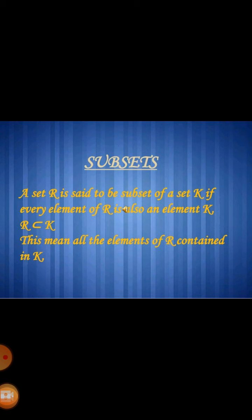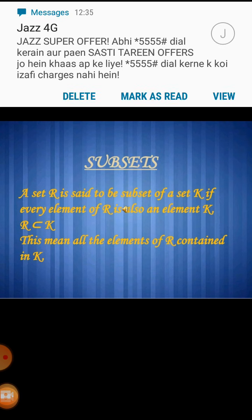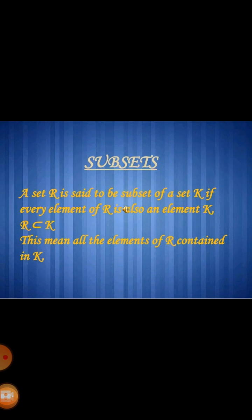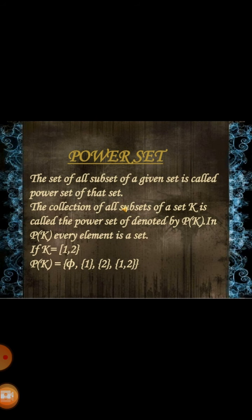Next we have subset. A set R is said to be a subset of a set K if every element of R is also an element of K. We express this with a subset symbol, meaning all the elements of R are contained in K. Next we have power set: the set of all subsets of a given set is called the power set of that set.